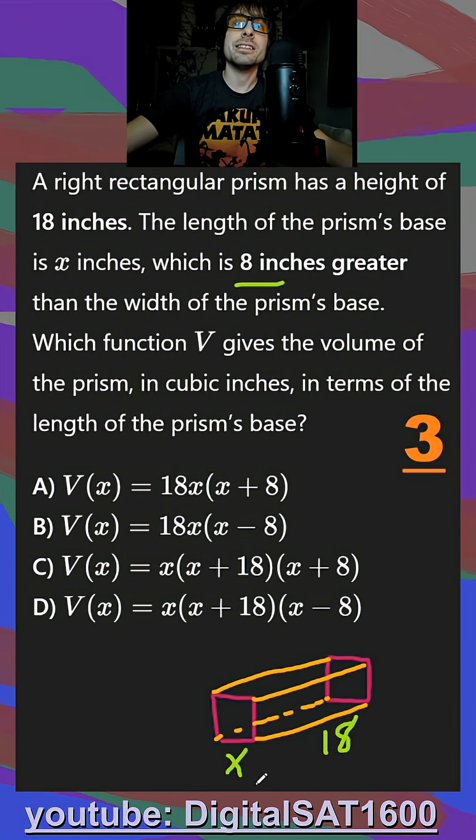it's the length that is x, and that is 8 greater than our third side here. So how could I show a third side that is 8 less than this? And that's going to be x minus 8.